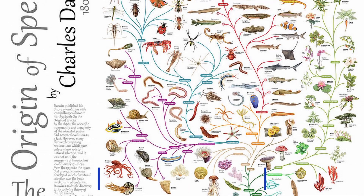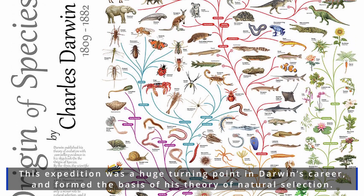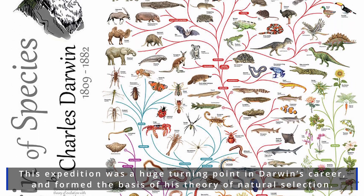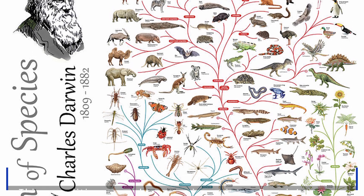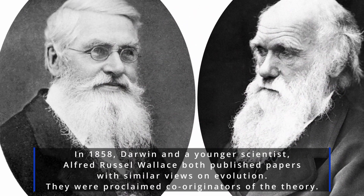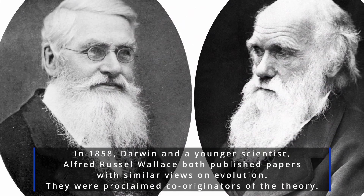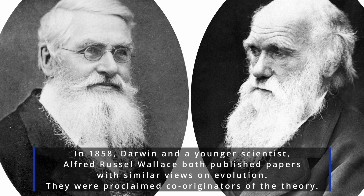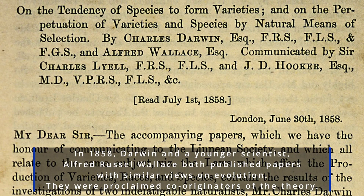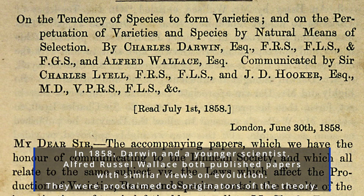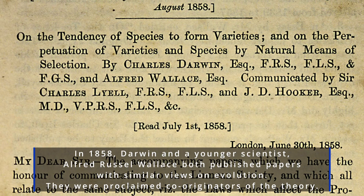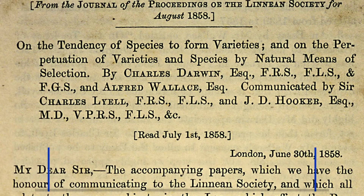This expedition was a huge turning point in Darwin's career, and formed the basis of his theory of natural selection. In 1858, Darwin and a younger scientist, Alfred Russell Wallace, both published papers with similar views on evolution. They were proclaimed co-originators of the theory.